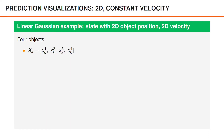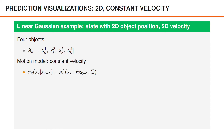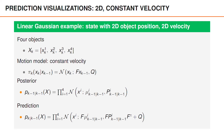Let's also have a look at an example where we have four objects, and the object state consists of 2D position and 2D velocity. Here we have a constant velocity transition density with a constant velocity motion model f and process noise covariance q. The posterior is Gaussian, and the predicted density is also Gaussian, with means and covariances given by the Kalman filter prediction.